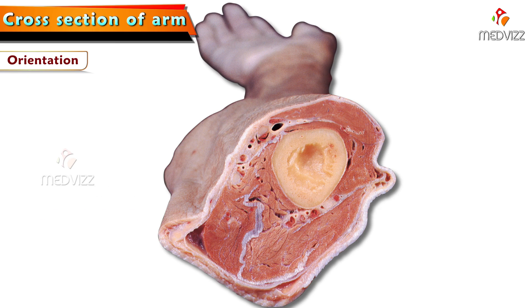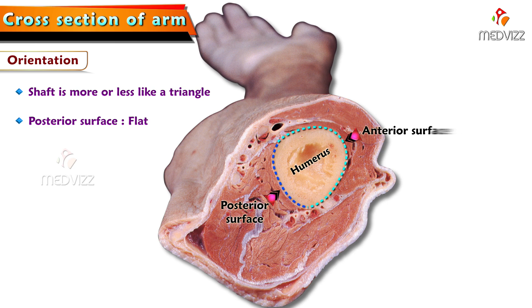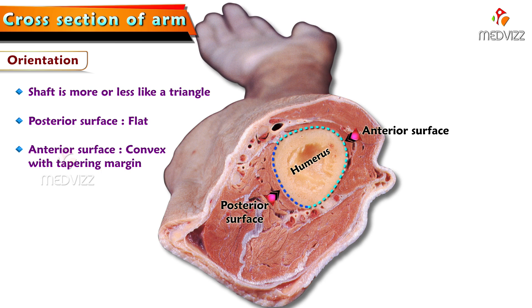Let me show you the orientation to identify the structure seen. Just have a look at the shaft of the humerus. The shaft is more or less like a triangle — the posterior surface is almost flat. You can see the posterior surface of the shaft of the humerus is almost flat and the anterior surface is tapering anteriorly, which is more or less convex, giving almost a triangular appearance. So any cross section can be identified with the bone, which helps to understand the orientation of the specimen.